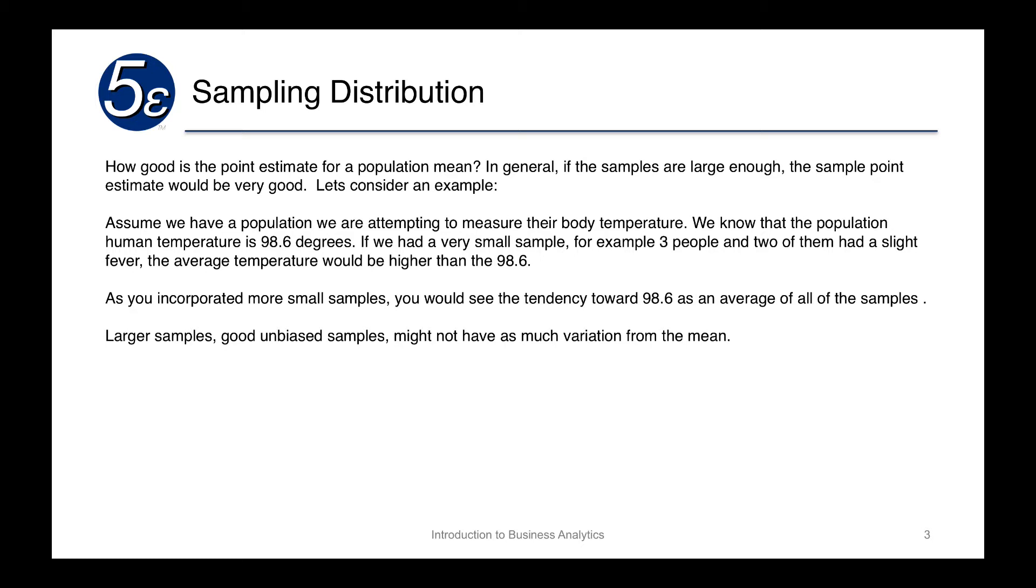Now, let's assume we have a population where we're attempting to measure body temperature. We know that the population human temperature is 98.6 degrees. If we had a very small sample, for example three people, and two of them had a slight fever, the average temperature would be higher than 98.6 degrees.